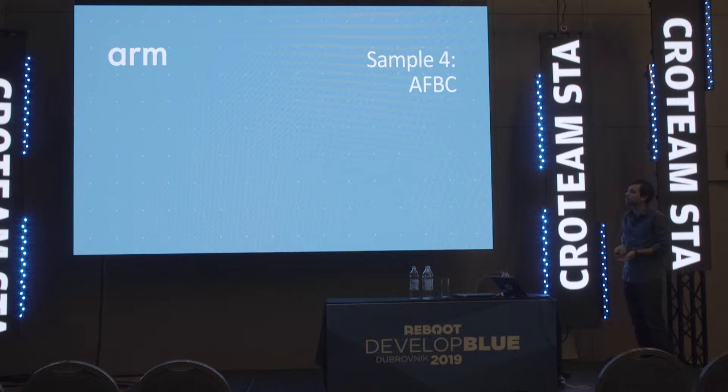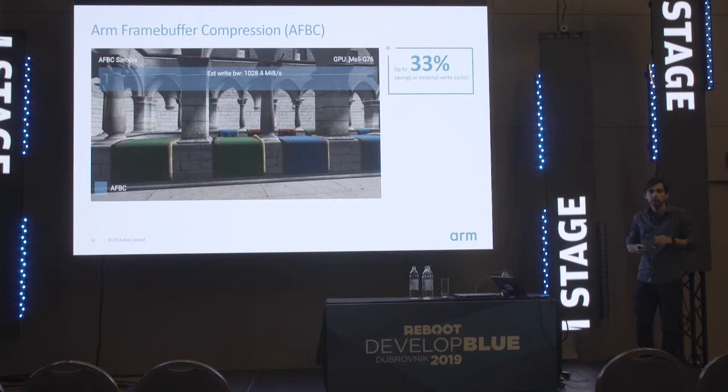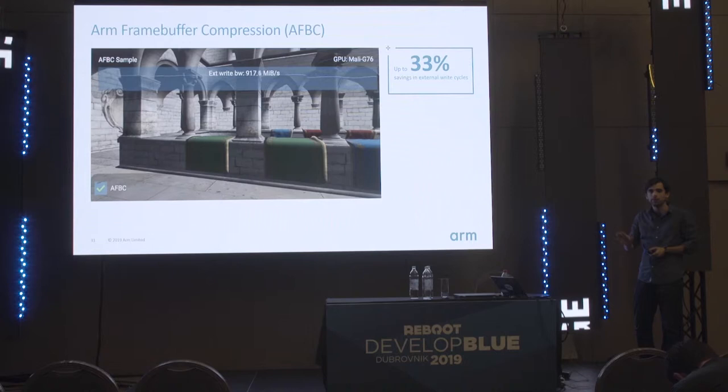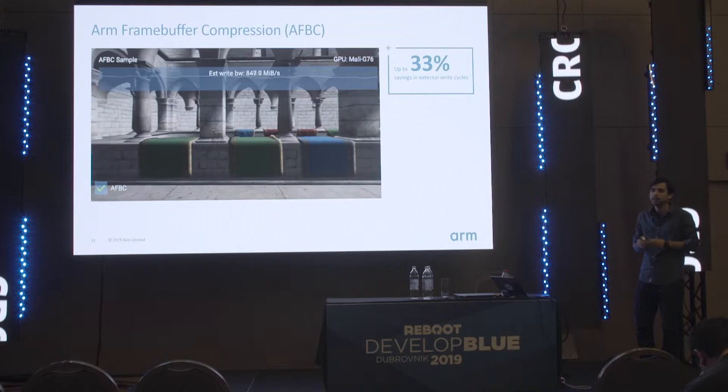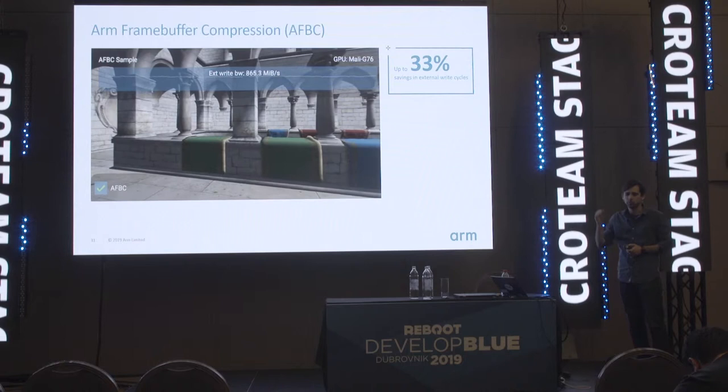Speaking of frame compression, the last sample I want to discuss is AFBC — the ARM Frame Buffer Compression. It's a protocol and format for compressing frame buffers. This is not something you have to explicitly enable in Vulkan; if it is supported by the device, you should take advantage of it at no cost. However, certain combinations of initializing your images and image views may prevent AFBC from kicking in.